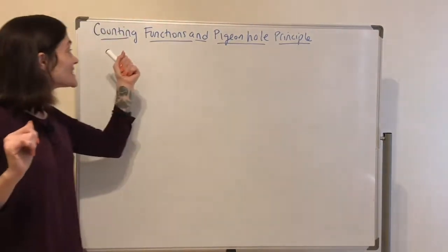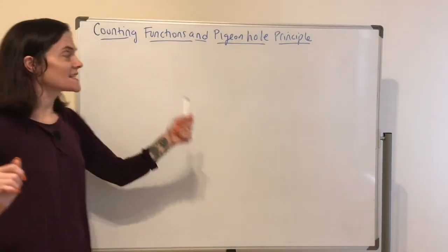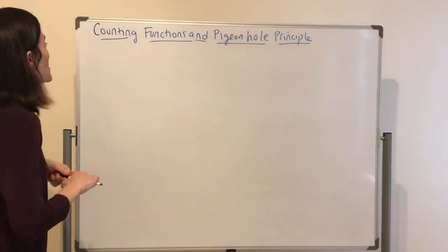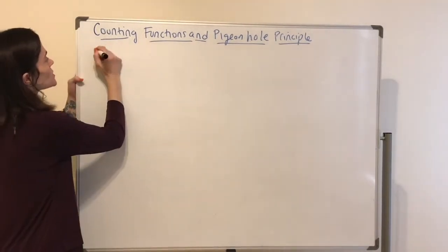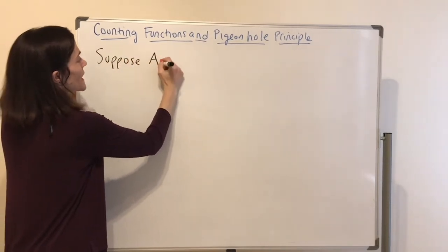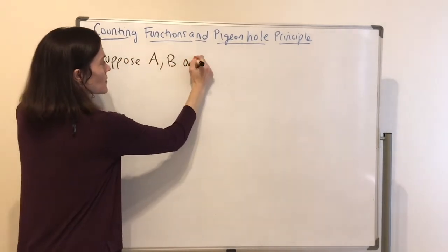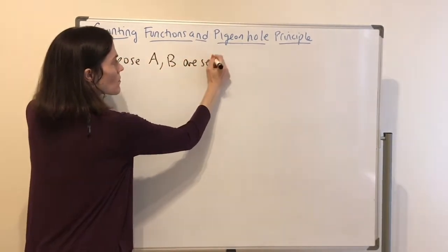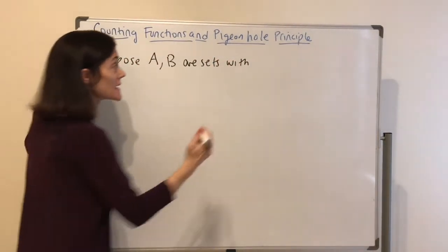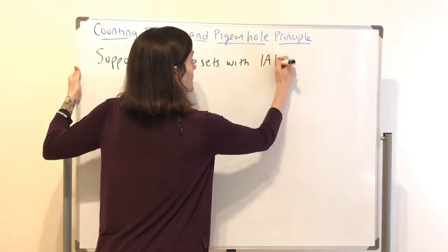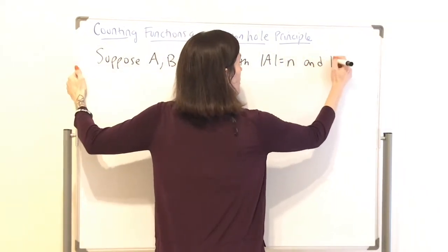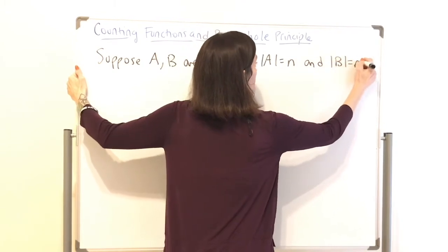Today we are counting functions and discussing the Pigeonhole Principle. Some things we know — let's start off and suppose we have two finite sets A and B, such that the cardinality of A is N and the cardinality of B is M.